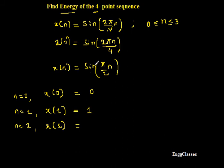Lastly, let n = 3, I'm going to get x(3). If I put n = 3, I'm going to get sin(3π/2). It is sin 270 degrees, which is always -1. Are you getting it?